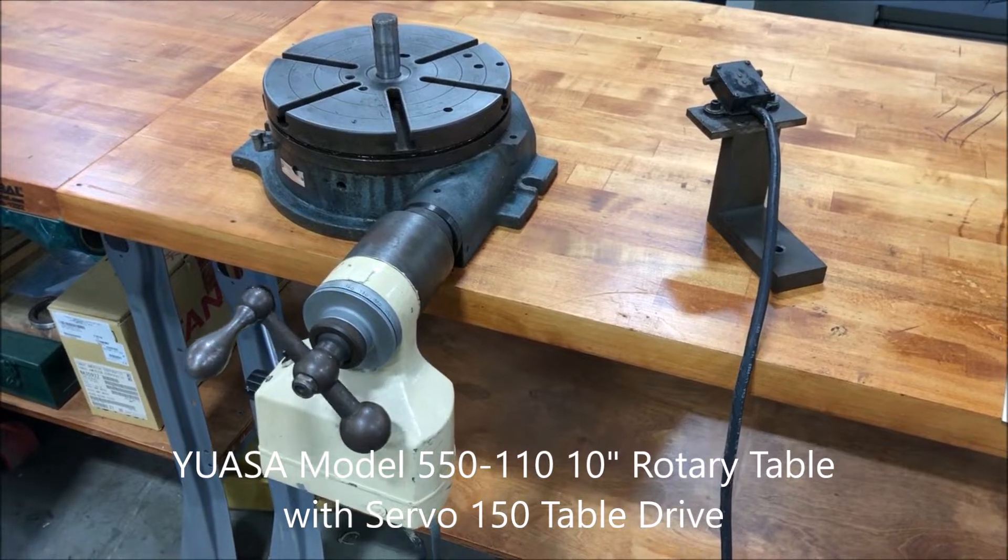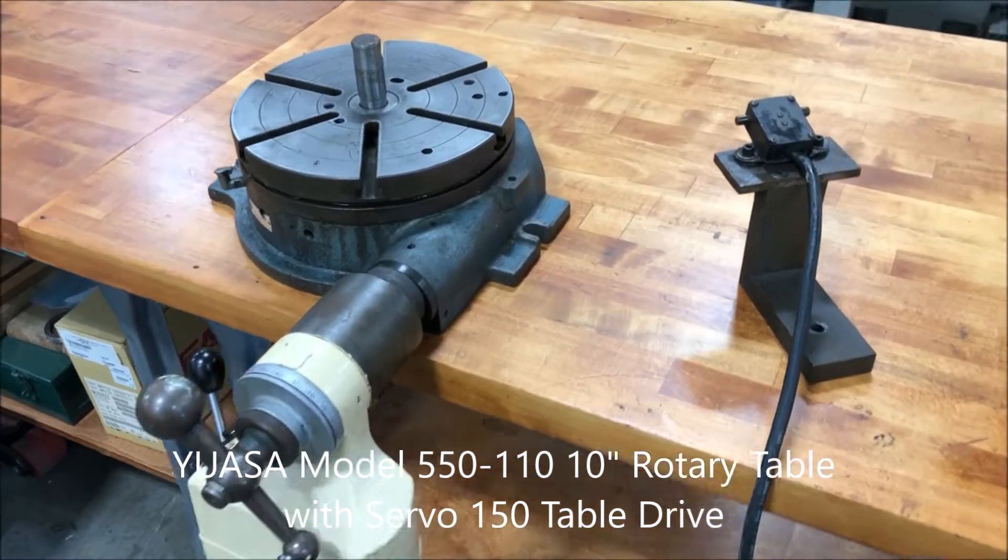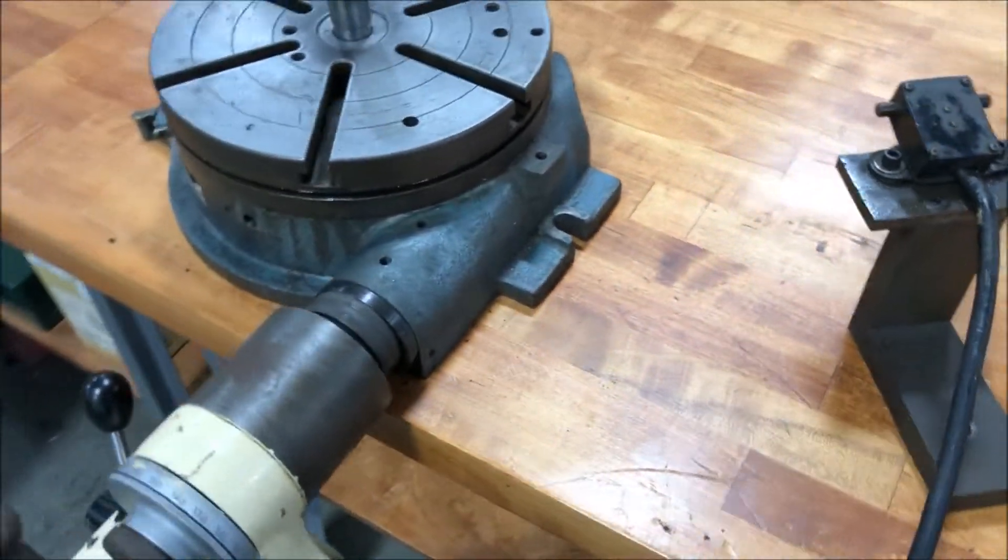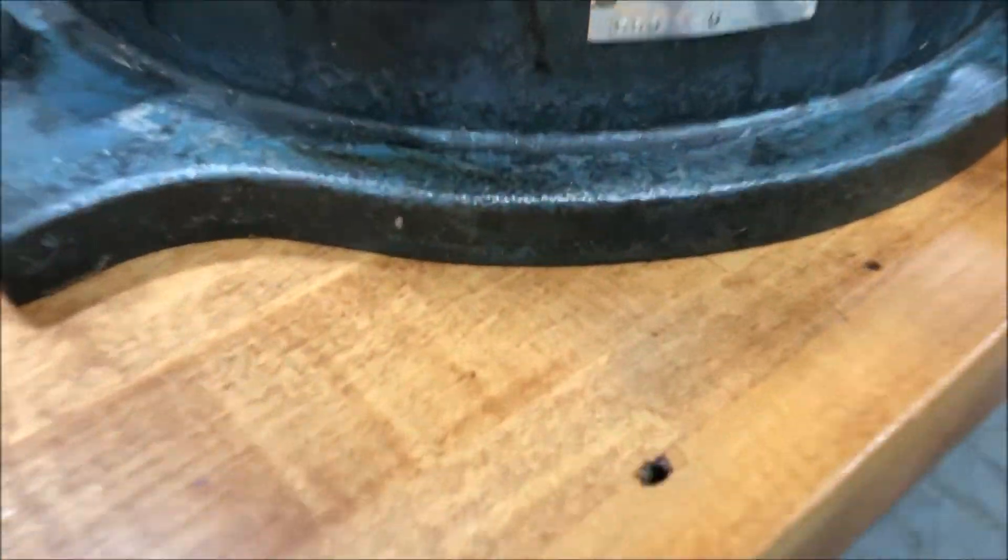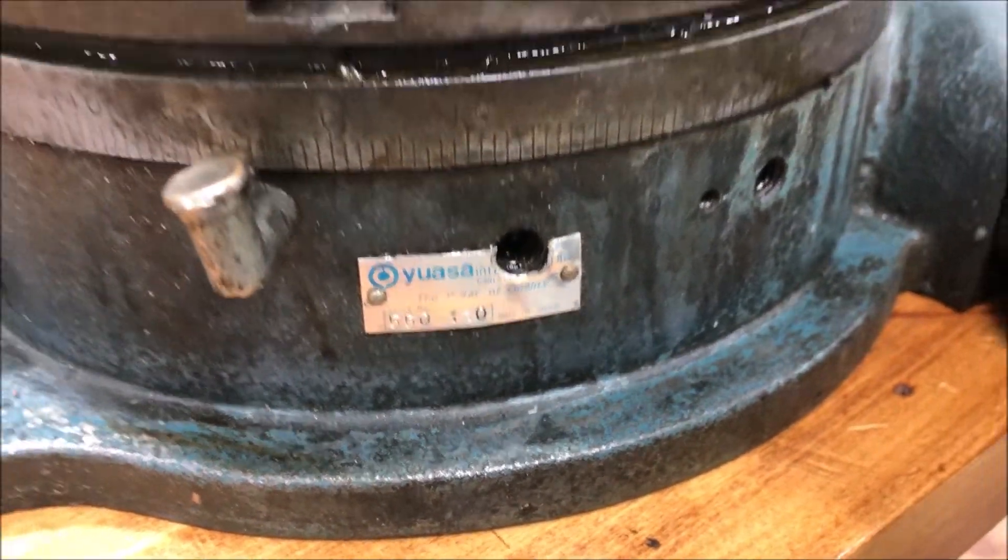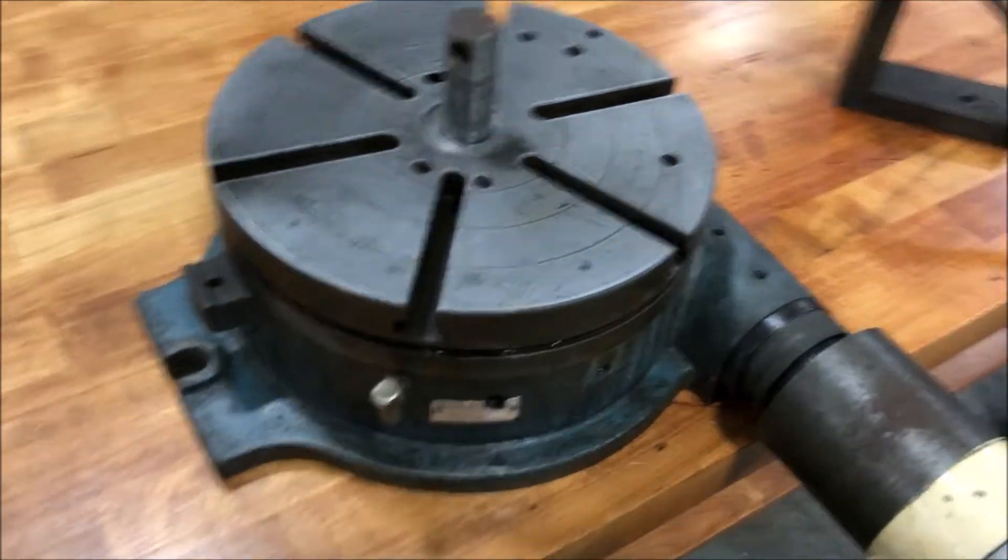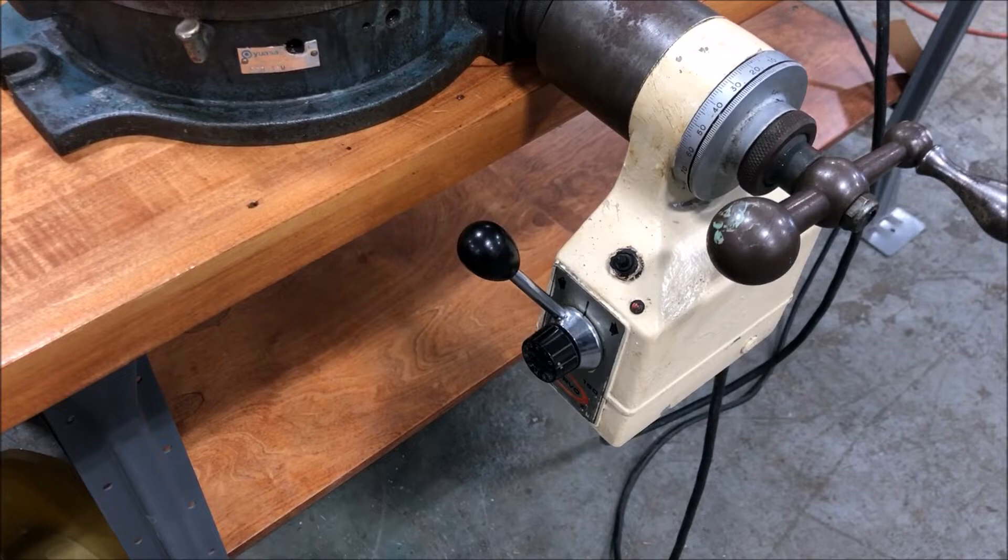Hello, welcome to New England Industrial Machinery. Today we're doing a video demonstration of a Yuasa motorized rotary table. It is a model 550-110, about a nine and three-quarter inch diameter table, and it's equipped with this Servo 150 drive.